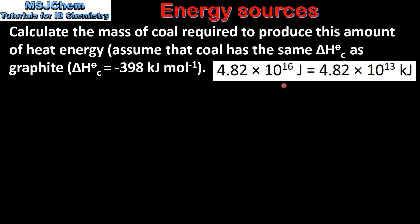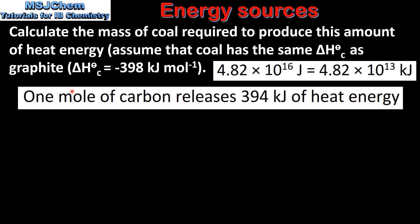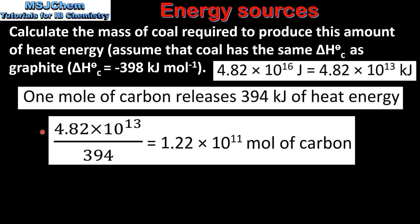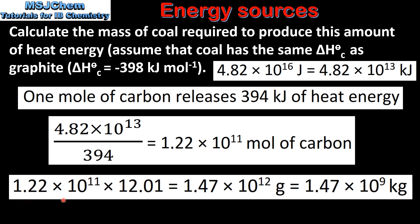First we convert the total input energy from joules to kilojoules by dividing by 1000. The standard enthalpy change of combustion tells us that one mole of carbon releases 394 kJ of heat energy. We then divide the total input energy by the energy released per mole of carbon, giving us 1.22 × 10¹¹ moles of carbon. Finally, multiplying by the molar mass of carbon, 12.01, gives us 1.47 × 10¹² grams, or 1.47 × 10⁹ kilograms.